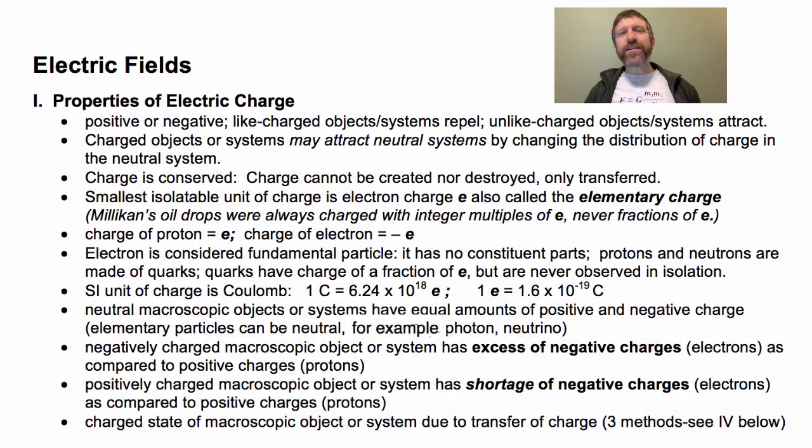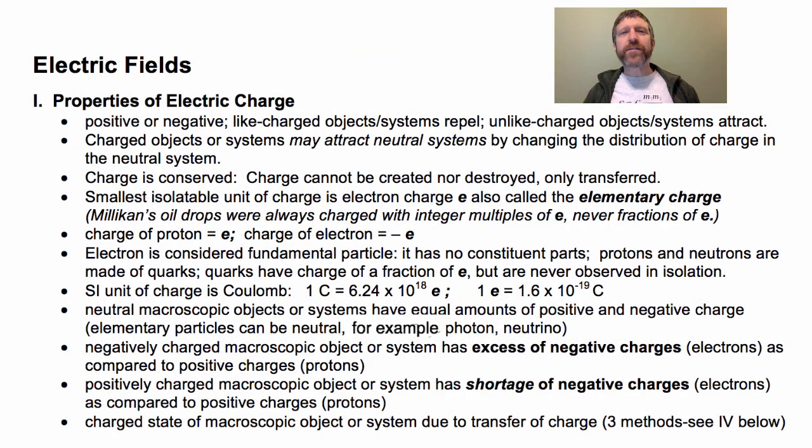Instead of the gravitational constant, we have Coulomb's constant. And instead of masses, which produce a gravitational field, we'll have charge 1 and charge 2 here. So there's a great deal of similarity between electric fields and gravitational fields.